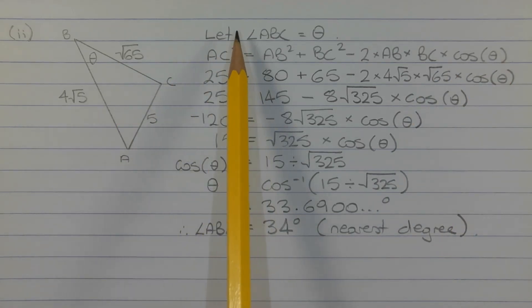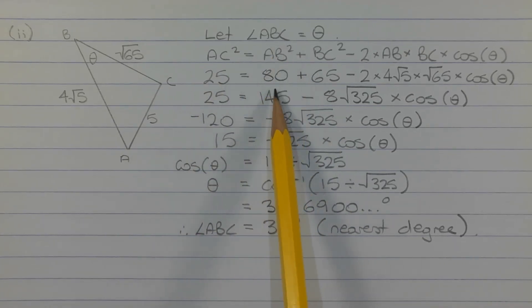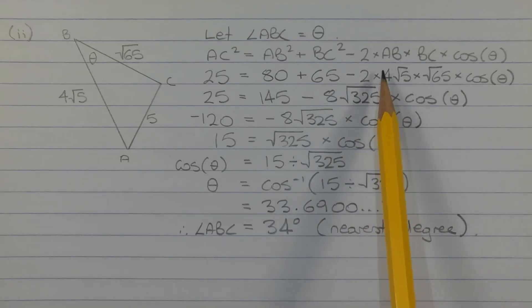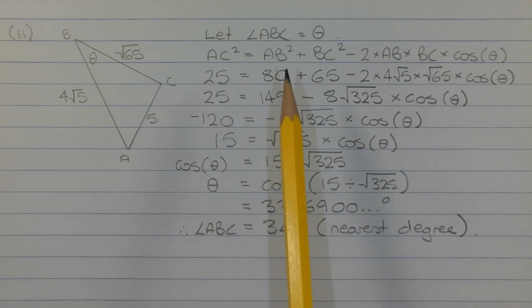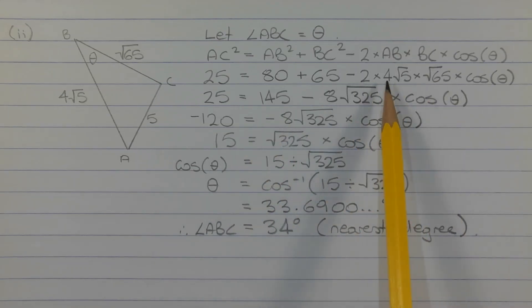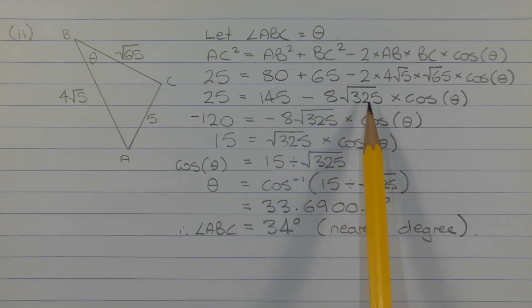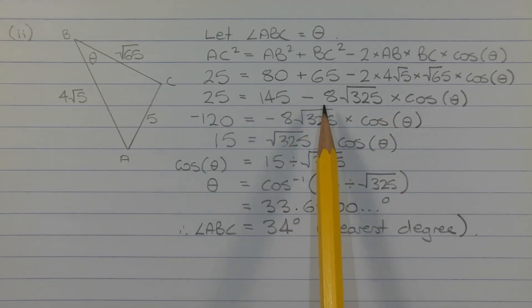We have the value of AC squared, so that's 5 squared which is 25, equal to AB squared which is 80, plus BC squared which is 65, minus 2 times 4 root 5 times the square root of 65 times cos theta. Simplifying: 80 plus 65 is 145, and multiplying the 2, the 4 root 5, and the root 65 together gives minus 8 root 325. So the equation simplifies to 25 equals 145 minus 8 root 325 times cos theta.